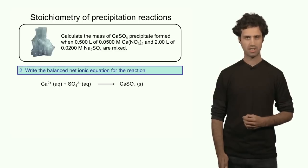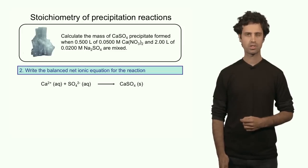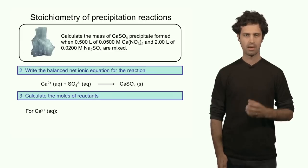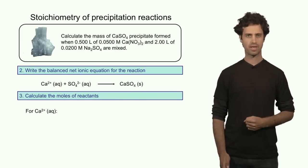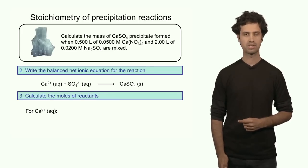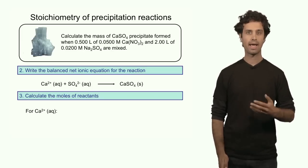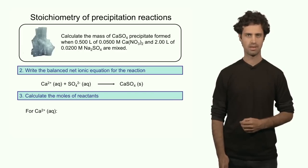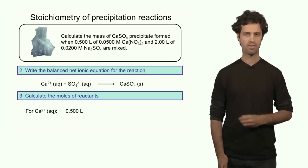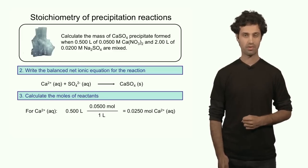In order to determine the limiting reagent, we have to find the number of moles of each ion. Calcium ions come from calcium nitrate, and each calcium nitrate unit produces one calcium ion. Multiplying the volume and molarity of the calcium nitrate solution: 0.5 liters times 0.05 molar equals 0.025 moles of calcium ions.